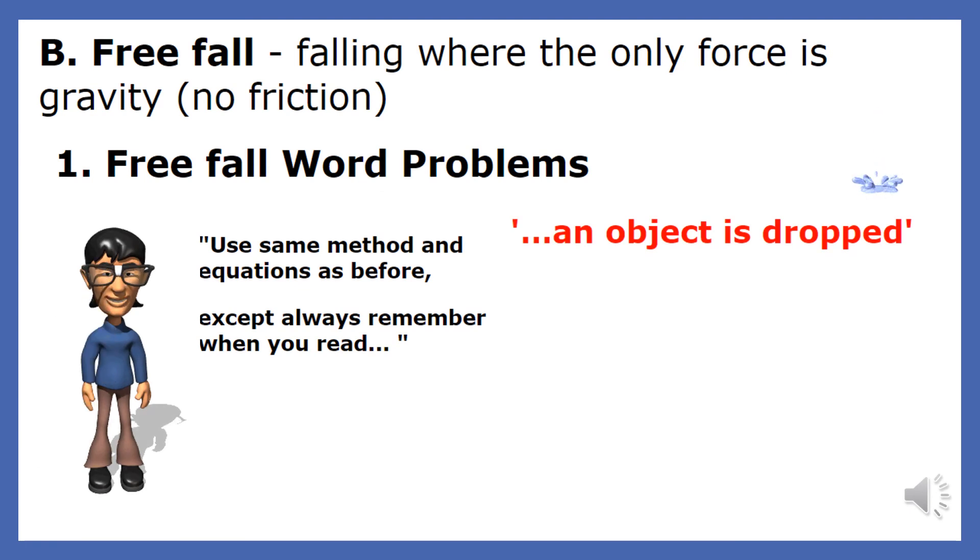The acceleration due to gravity is a vector, so it has magnitude and direction. It has the same direction as the force of gravity, down.